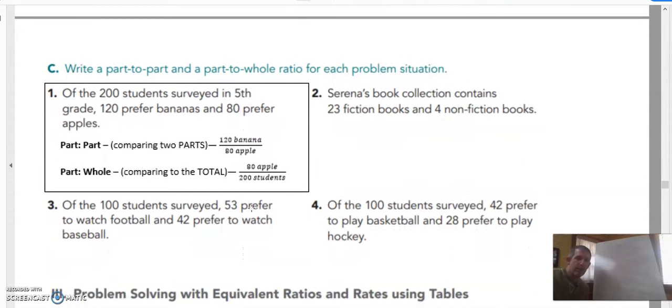Write a part-to-whole rate, part-to-part and a part-to-whole ratio for each problem situation. Of the 200 students surveyed in fifth grade, 120 prefer banana and 80 prefer apples. So if we're doing a part-to-part, we would do the 120 banana over the 80 apples. But if it's a part-to-whole, we're doing the 80 apples to the 200 students. Because that is a total down there.